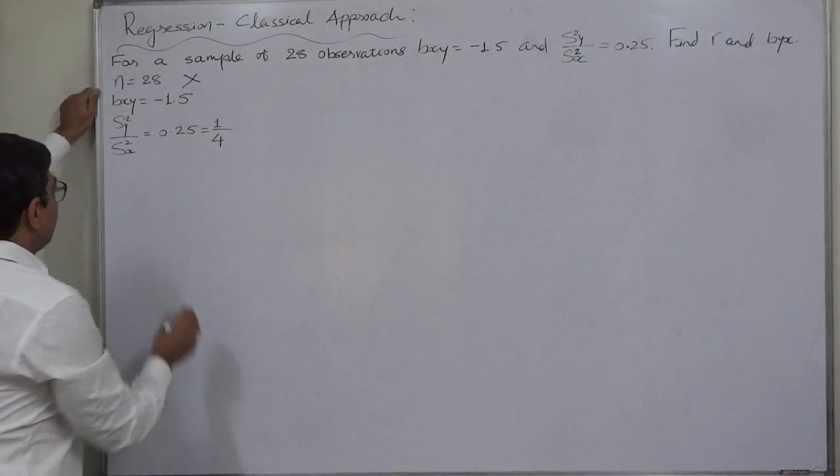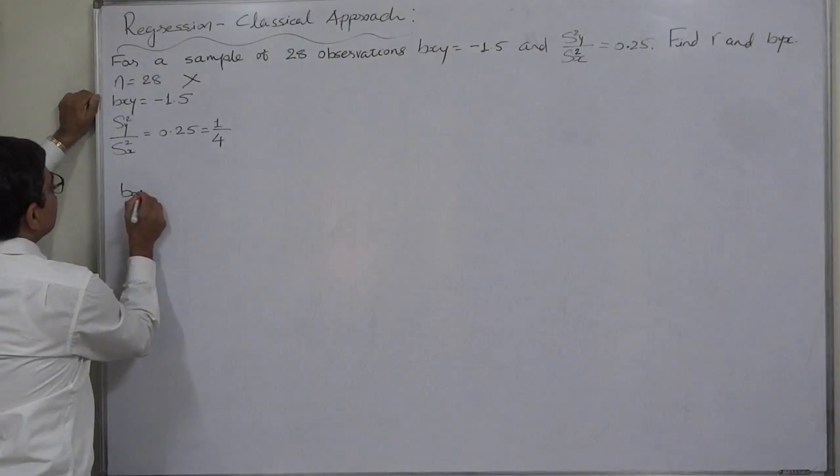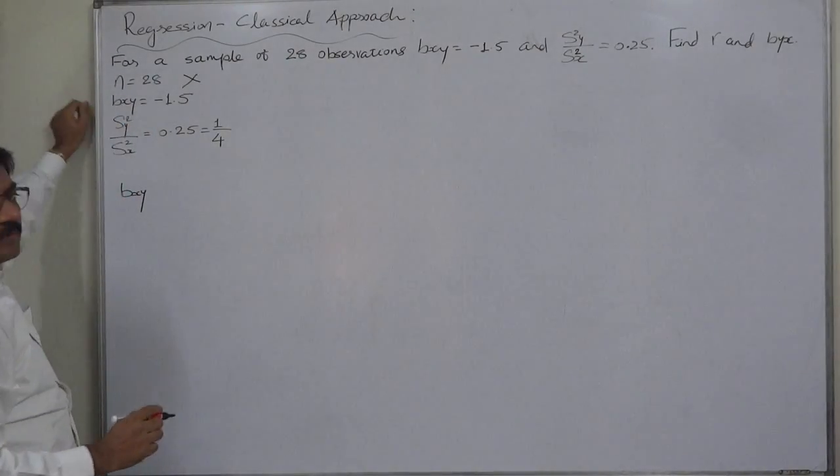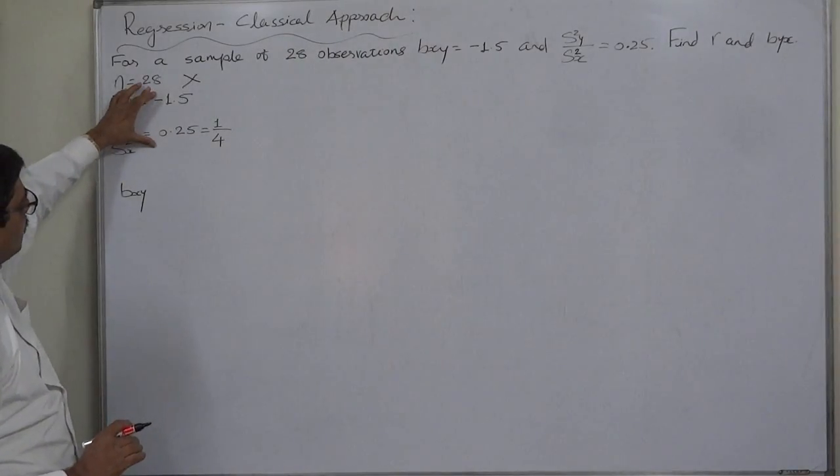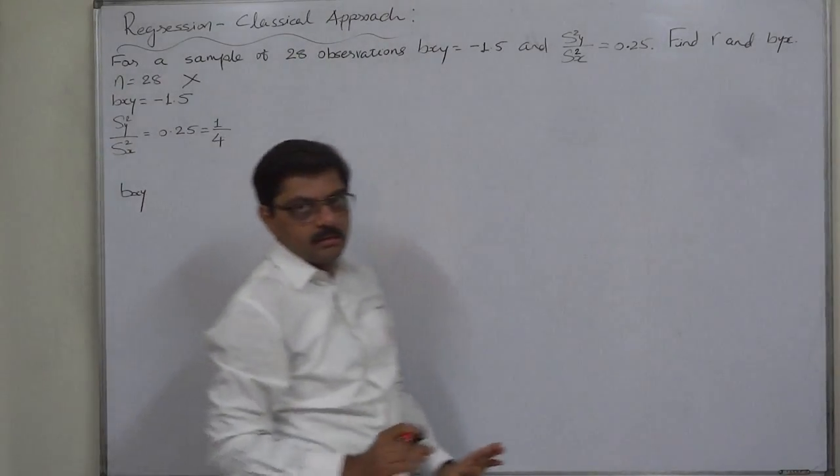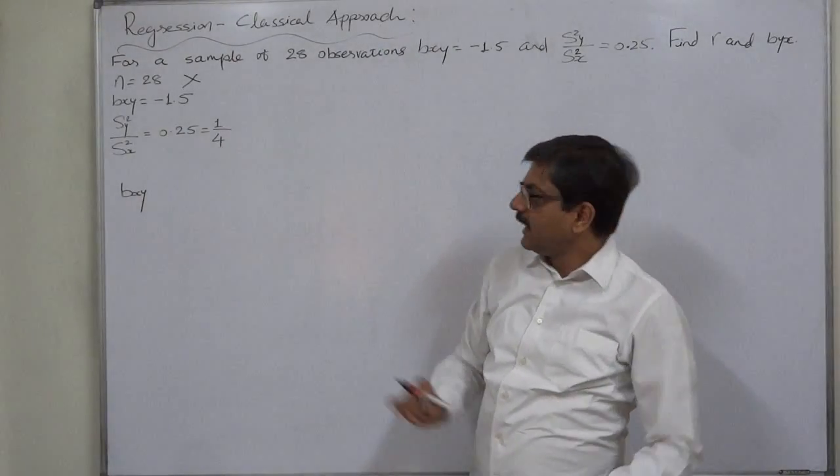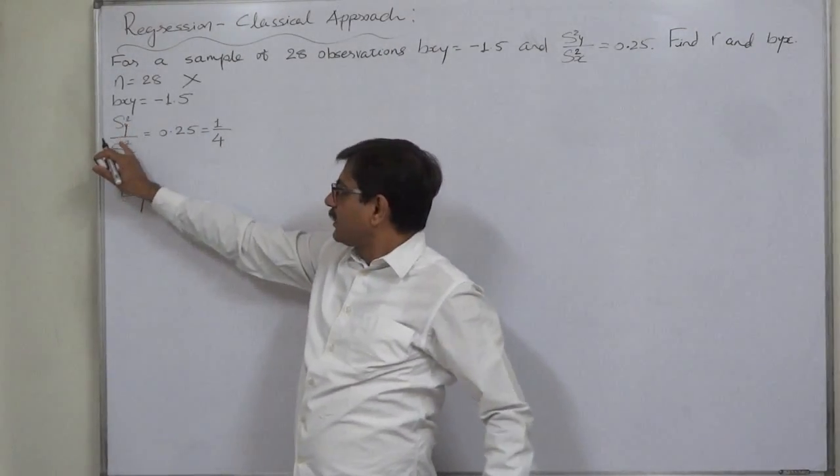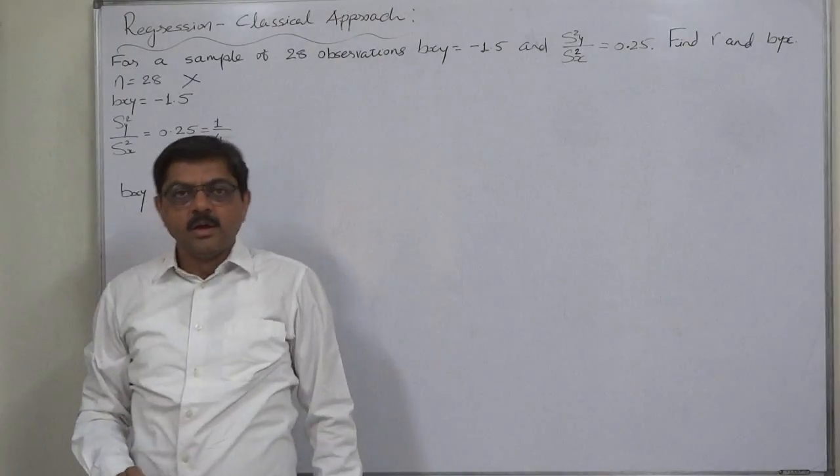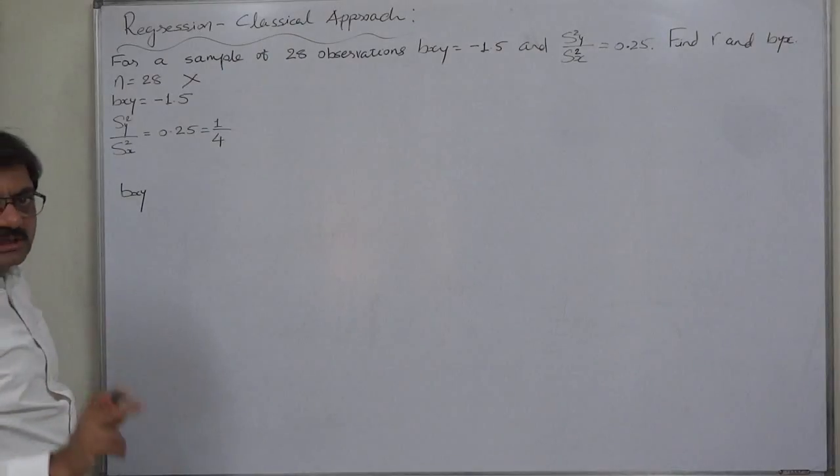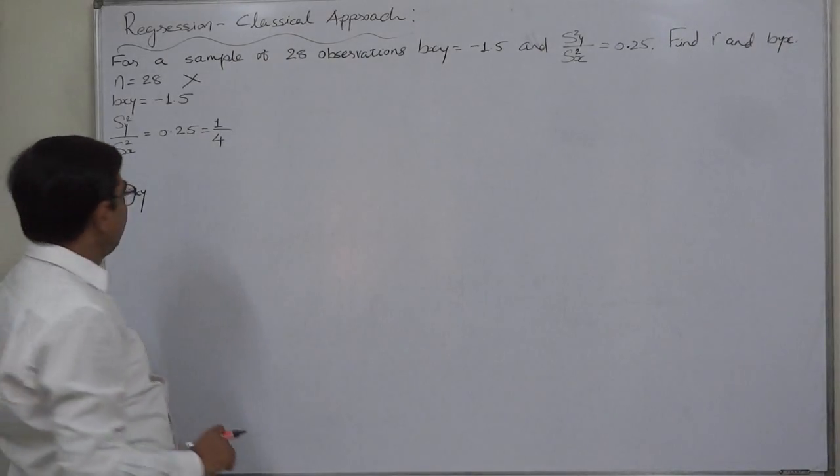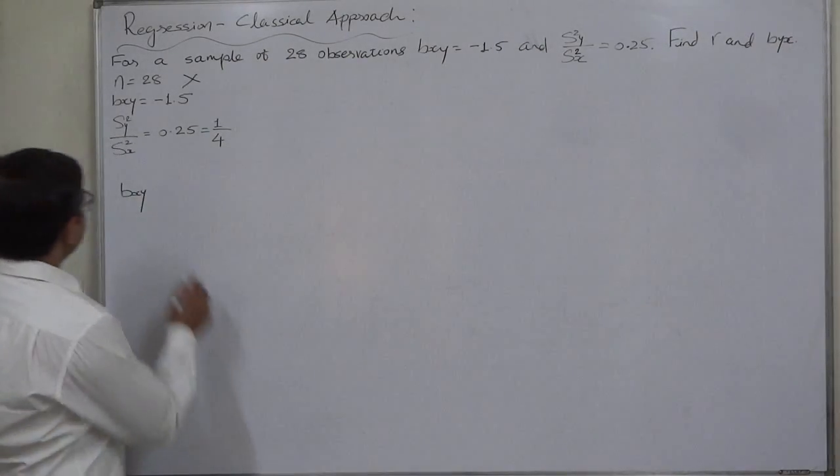Bxy is minus 1.5. Two information are actually usable: Bxy and Sy square upon Sx square. What is the relationship between Sy square and Sx square? See, what is the formula of Byx or Bxy by definition?